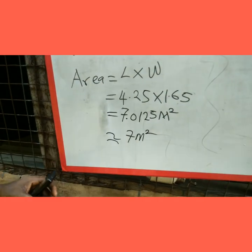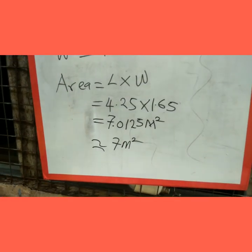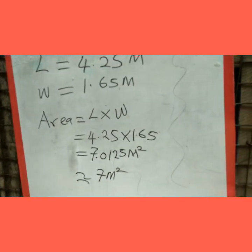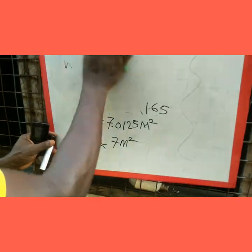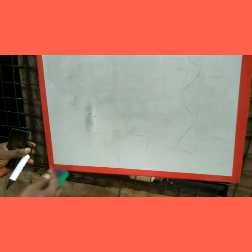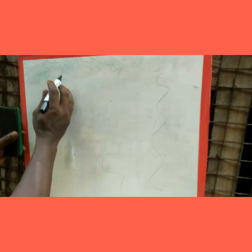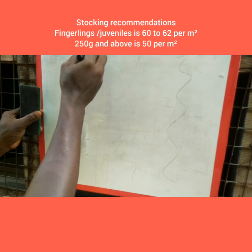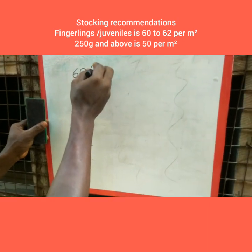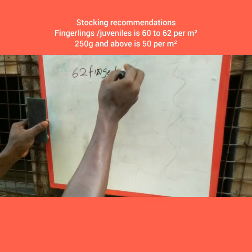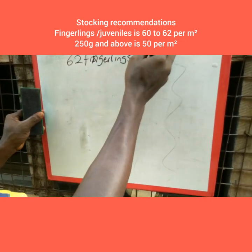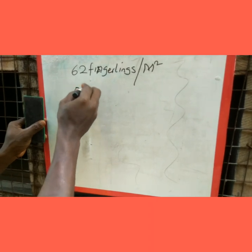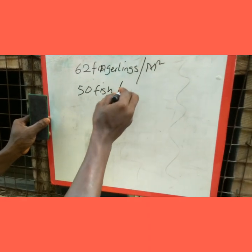To know the stocking capacity of our pond, we have our stocking recommendations. If they are fingerlings or juveniles, we recommend 60 to 62 fish per square meter. Then from 250 grams to 1 kg, you use 50 fish per square meter.